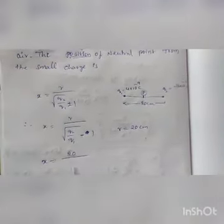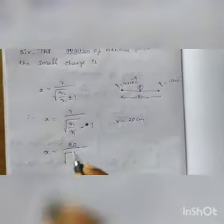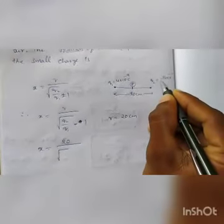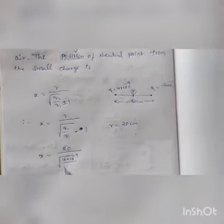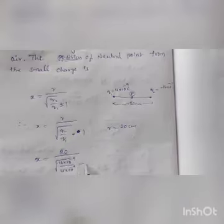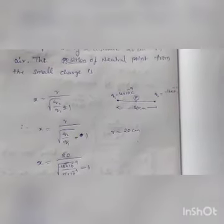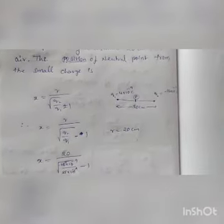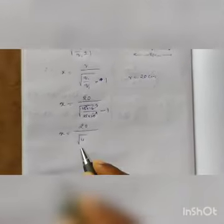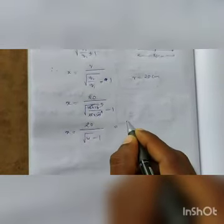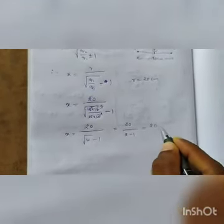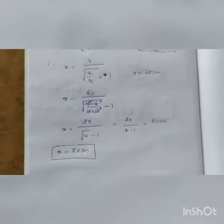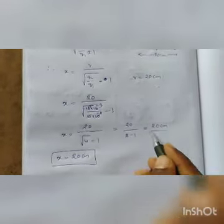Evaluating: √4 = 2, so x = 20 / (2 − 1) = 20 / 1 = 20 centimeters. The null point distance from the smaller charge is 20 centimeters.